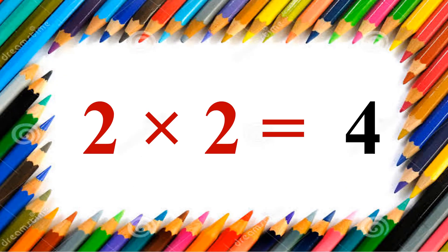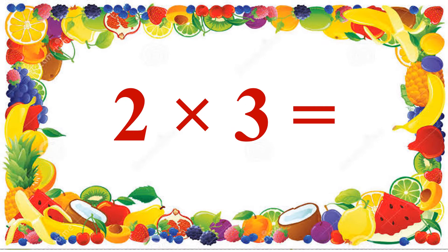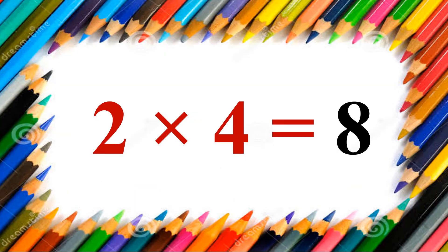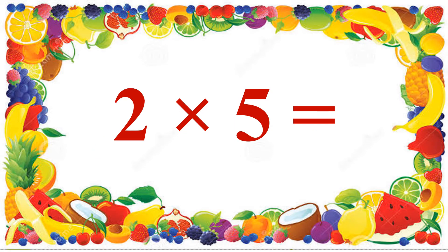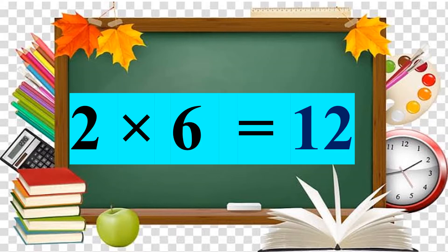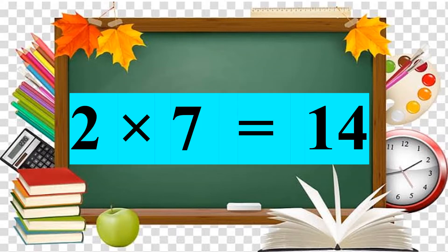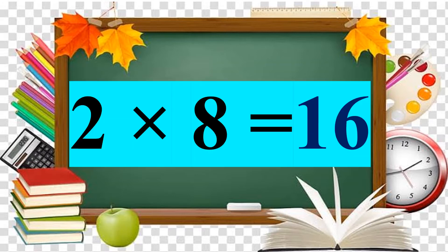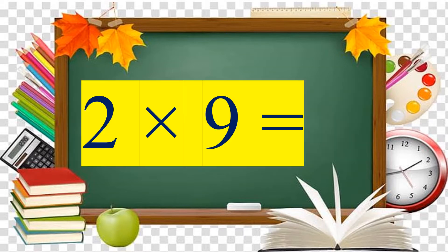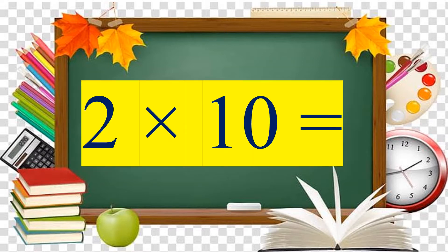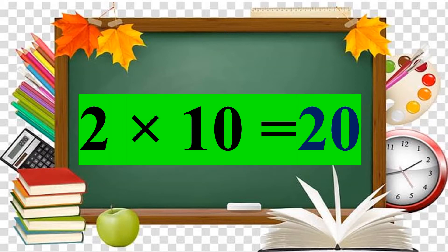2 twos are 4. 2 threes are 6. 2 fours are 8. 2 fives are 10. 2 sixes are 12. 2 sevens are 14. 2 eights are 16. 2 nines are 18. 2 tens are 20. That's all.